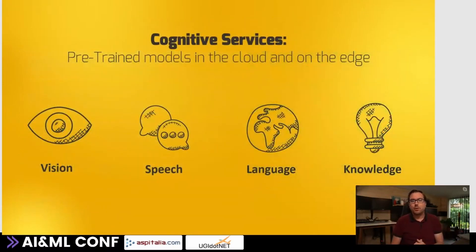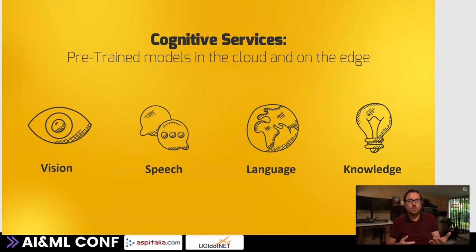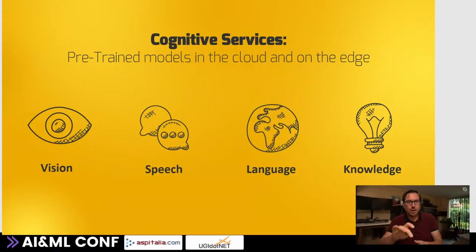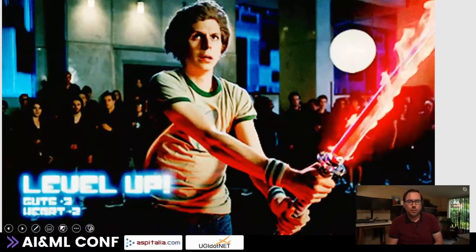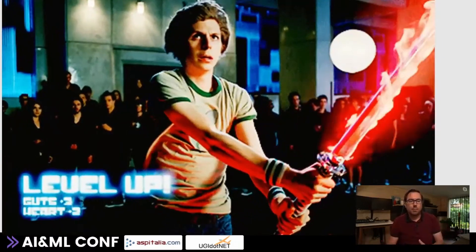Cognitive services are pre-trained models in the cloud and on the edge, divided into four categories: vision, speech, language, and knowledge. Vision to make your application see. Speech to make your application talk and listen. Language to understand what is being spoken. And knowledge if you want to give your application a brain. But today, we're not going to talk about cognitive services.